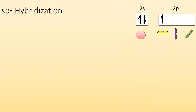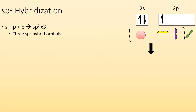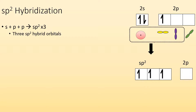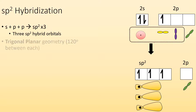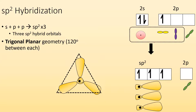For sp2 hybridization, we take an s, a p, and another p, mix them together, and we get three sp2 hybridized orbitals. The shape of the hybrid orbitals still looks like a mixture of s and p — it hasn't changed much from sp hybridized. The geometry around the central atom with this hybridization would be trigonal planar, or 120 degrees between each, because the hybrid orbitals repel each other and try to get as far away as possible, taking on the trigonal planar shape.